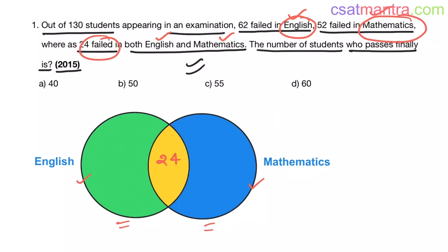Now, how many people failed in English? That is 62. This is 24 and this total should be 62. Now, how much is this? 62 minus 24. That is equal to 38.